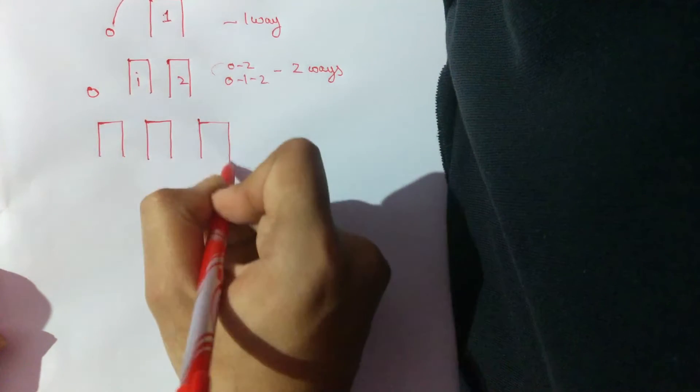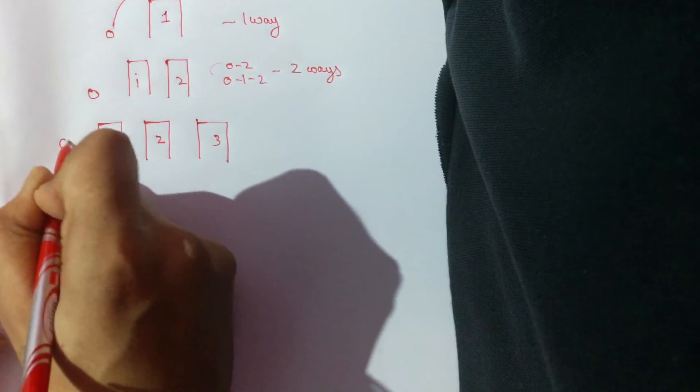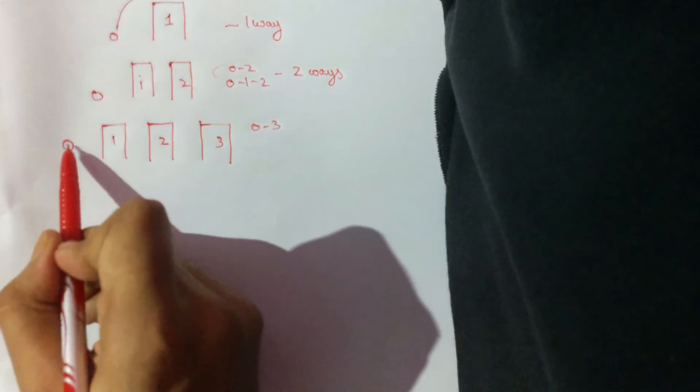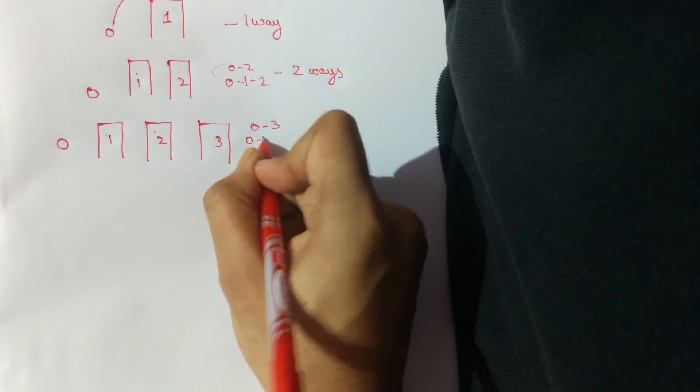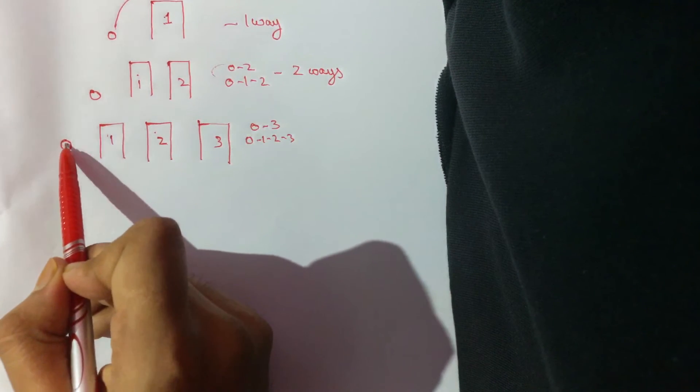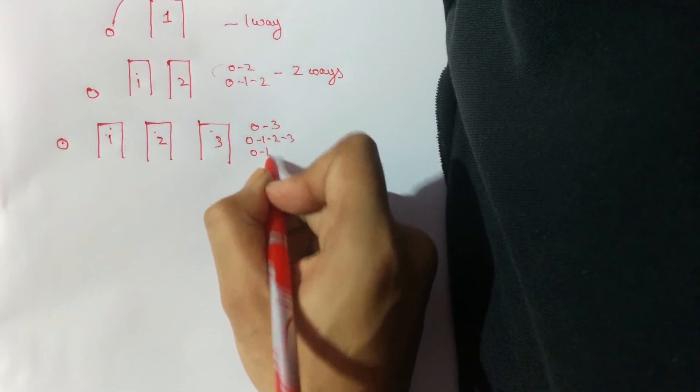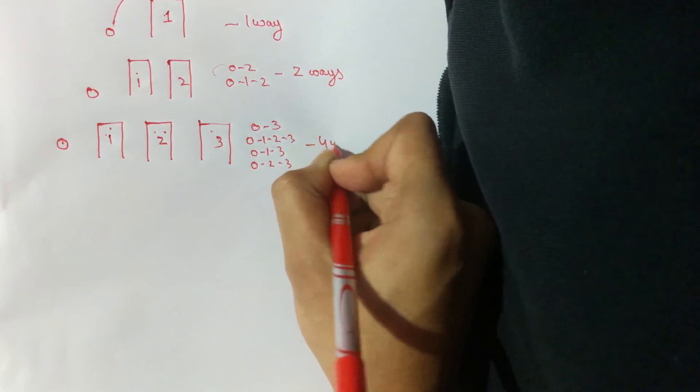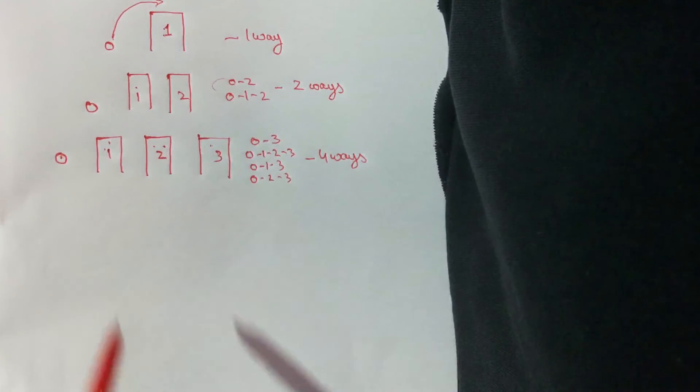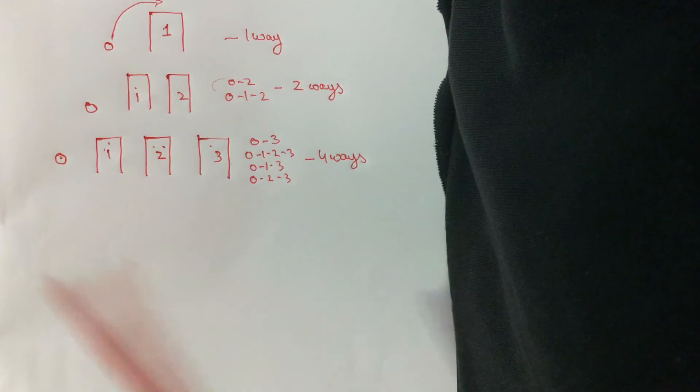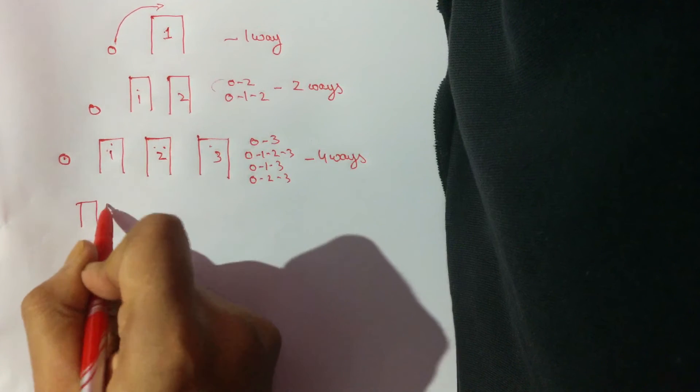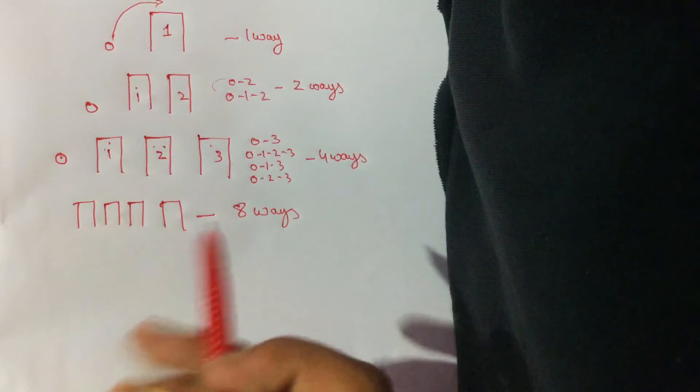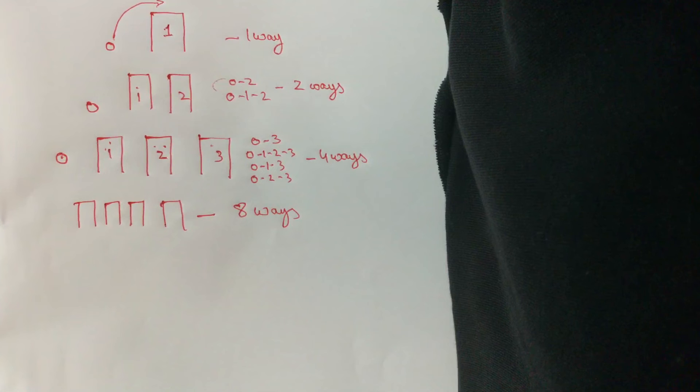So here he can directly go from zero to three, so there's one way. Or he can go zero, one, two, three, so there's another way. Or he can go zero, one, then three, or zero, two, three. So this is four ways he can do this. Similarly, if you notice, we already find a pattern. And if you calculate for four buildings, you will get just eight ways.